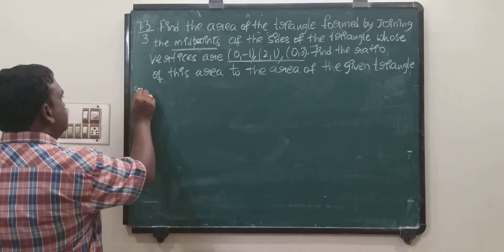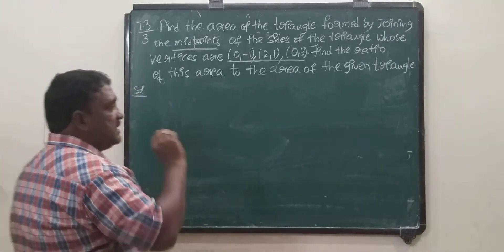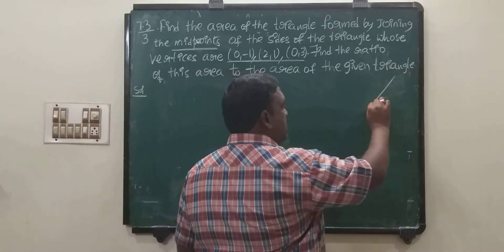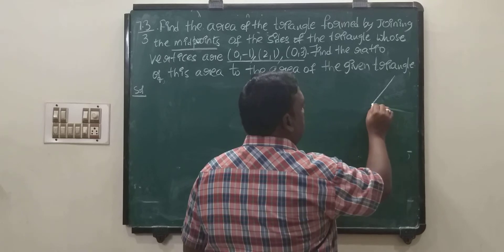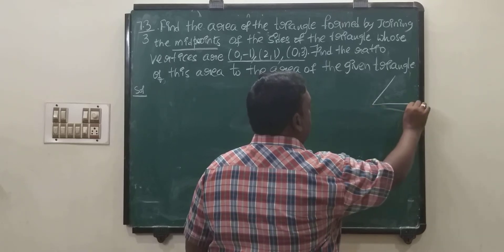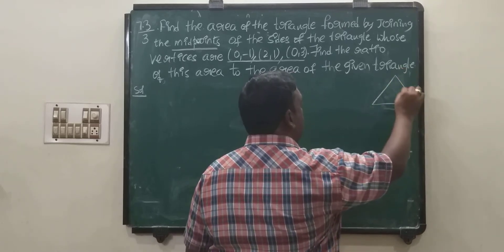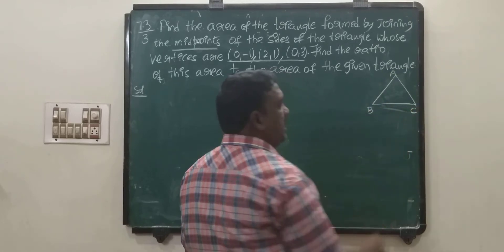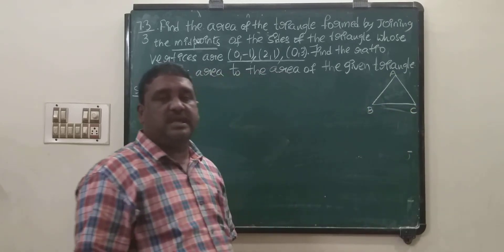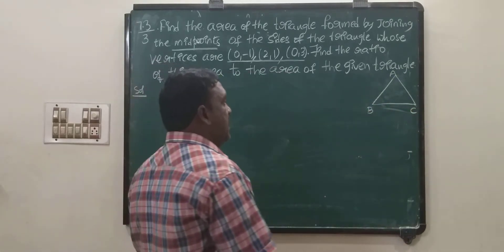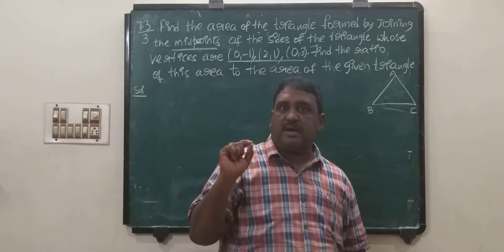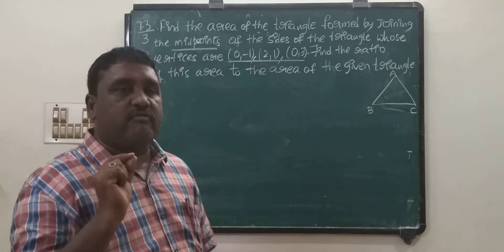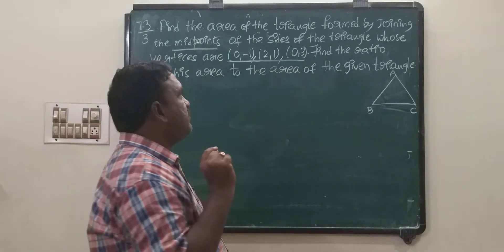Solution. See the diagram once. There is a triangle. A, B, C is a triangle. A, B, C are vertices of the triangle. They are vertices of the triangle.